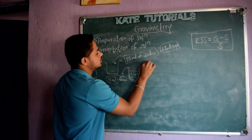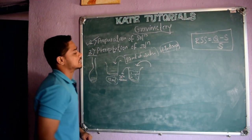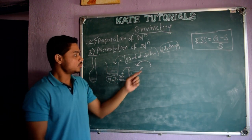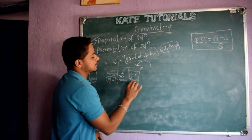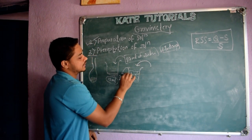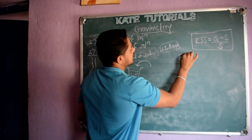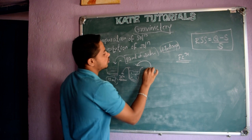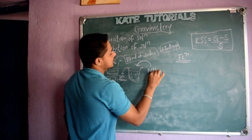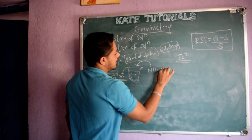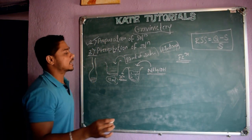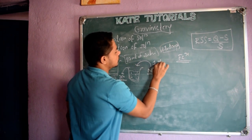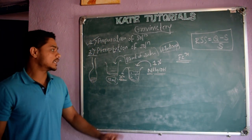Then, we add a suitable precipitating agent. Our aim is to precipitate this analyte. We add a suitable precipitating agent based on the nature of this analyte. I am considering Fe3+ as the analyte. So, what I am going to add? I am going to add a precipitating agent — I will add ammonium hydroxide. And this precipitating agent should also be dilute. Its concentration is 1% — 1% ammonium hydroxide I am going to add.